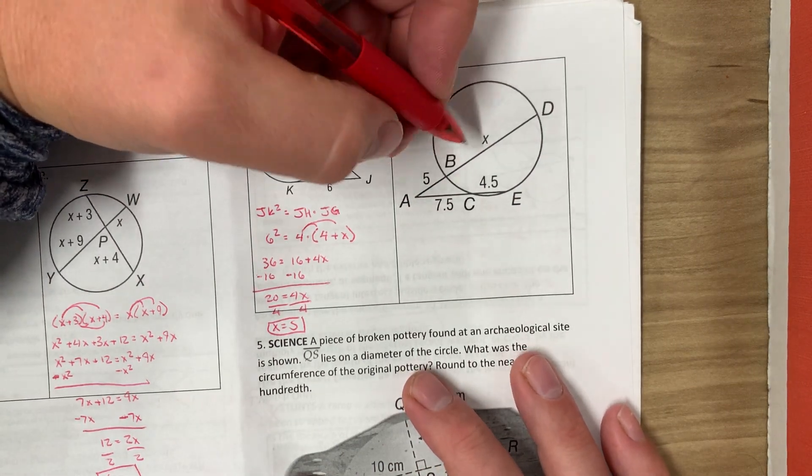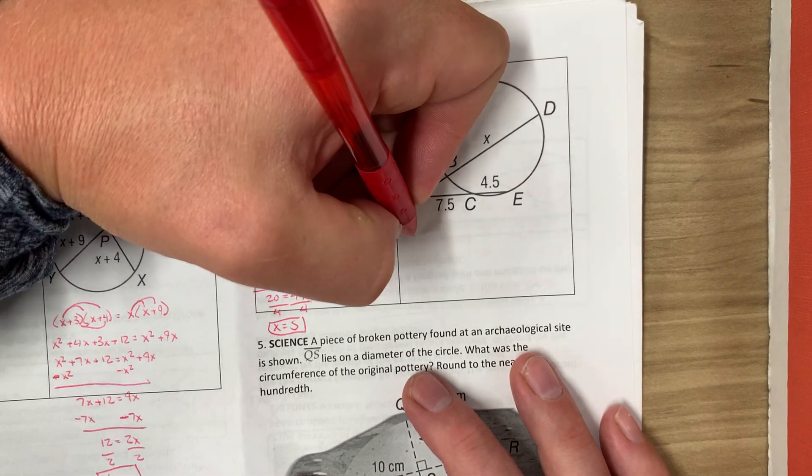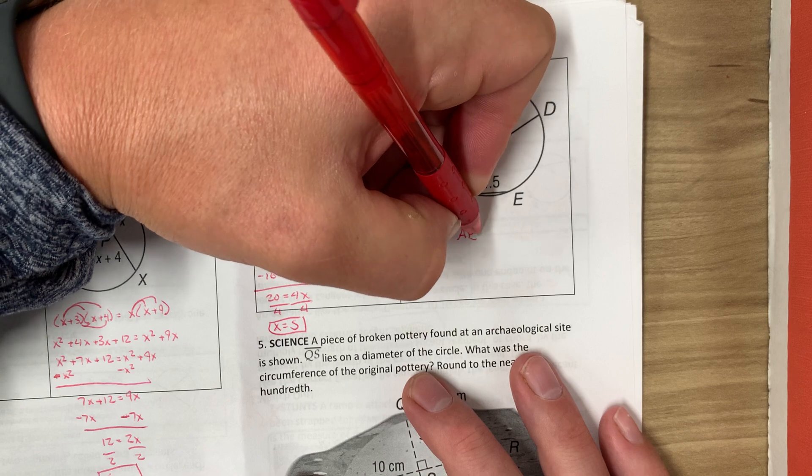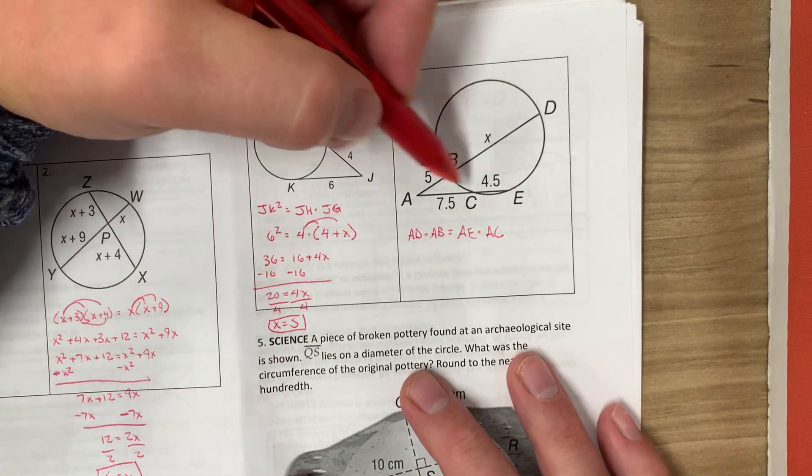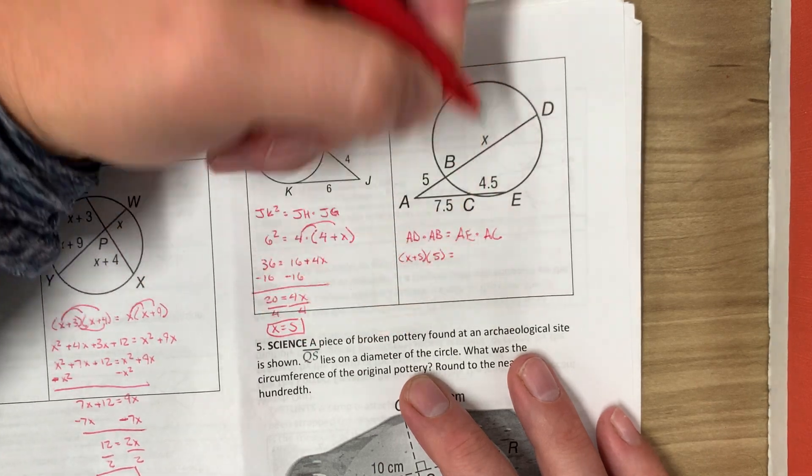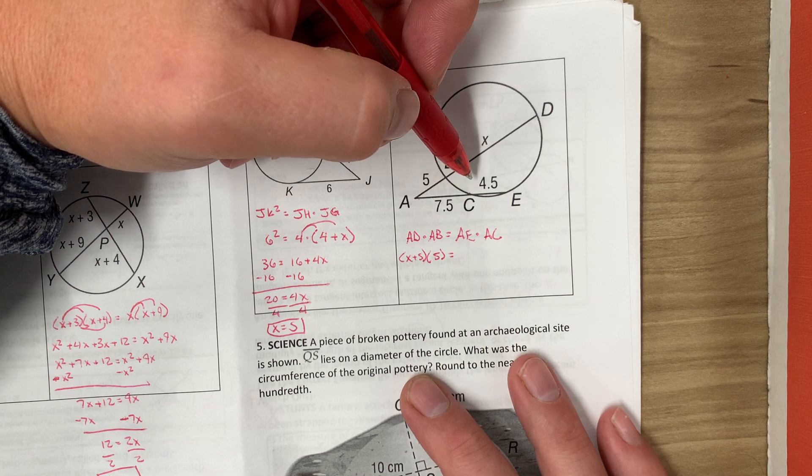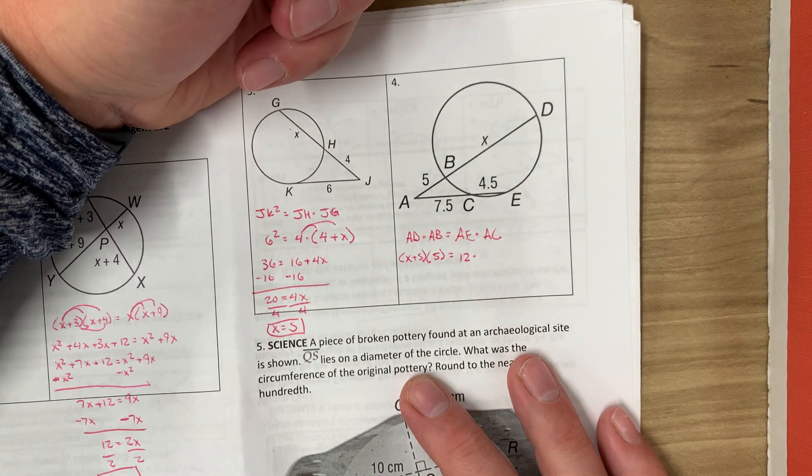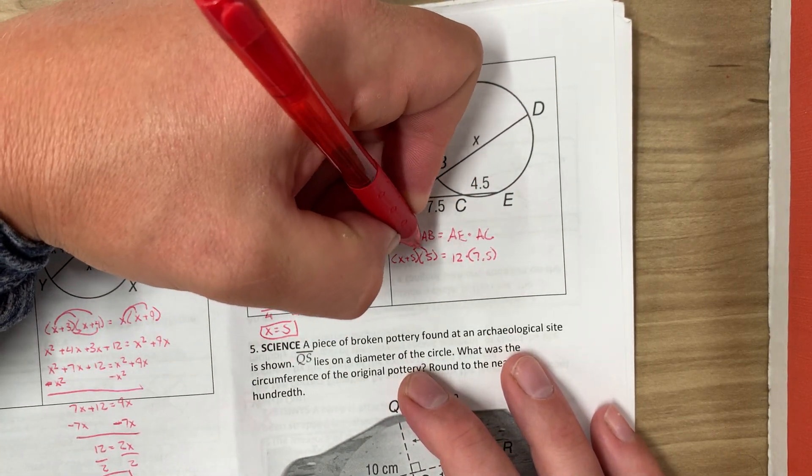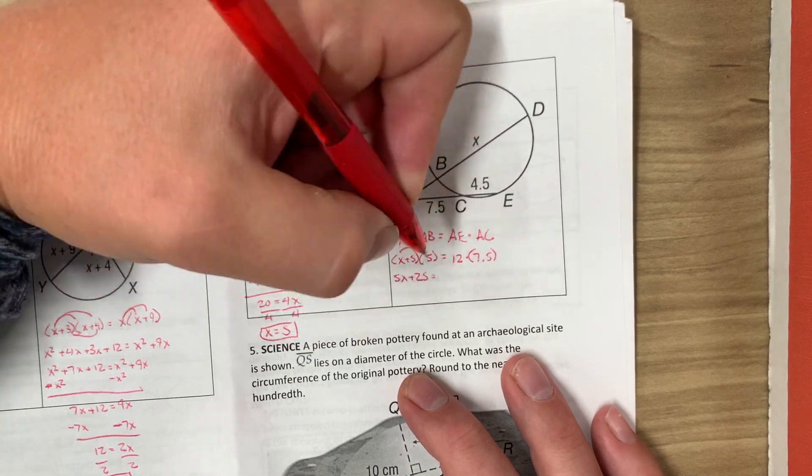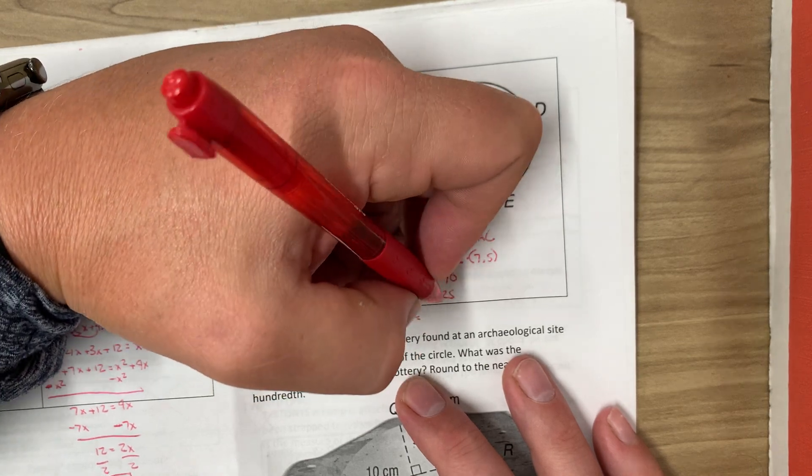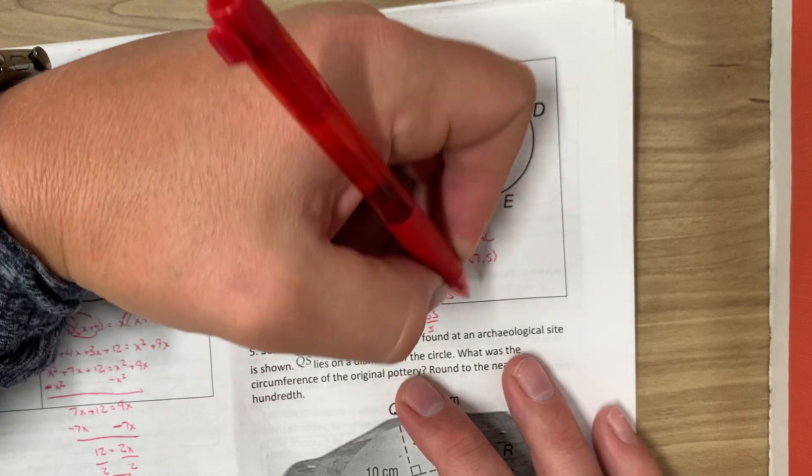Alright, on this one we're going to have AD, so the whole length times the external. So AD times AB, and the same thing, AE times AC. And we're just plugging our stuff in. AD would be this whole length, which would be X plus 5. AB is just 5. AE would be 4.5 plus 7.5, which would be 12, times AC, which is just 7.5. We're going to go ahead and distribute our 5. So we'll get 5X plus 25 equals, and 12 times 7.5 is 90. Then I'm going to subtract 25 from both sides. So I'll get 5X equals 65. Divide by 5. X equals 13.